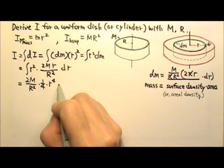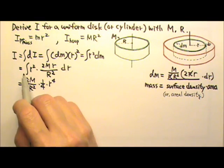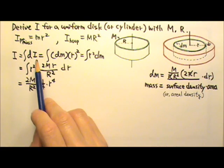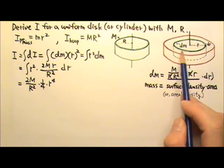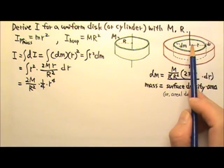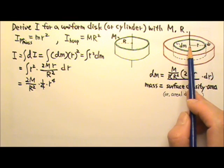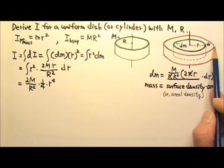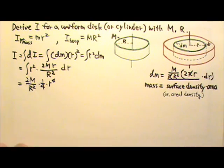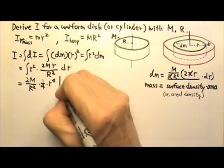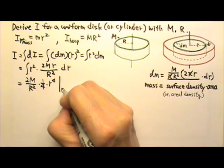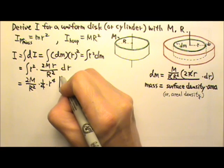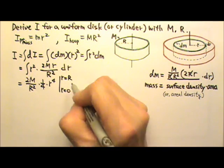And we do not have to do the plus c because this is a definite integral. We are adding all of the dI of all layers of thin hoops from the very center, little r equals 0, to the outmost layer, little r equals big R. So the lower limit of the integral is r equals 0. And we integrate all the way to the outmost layer, r equals big R.